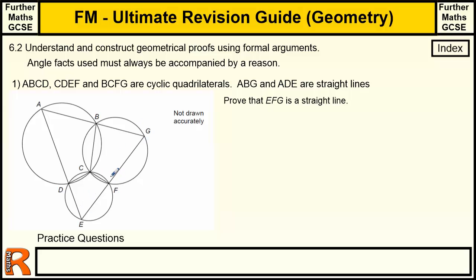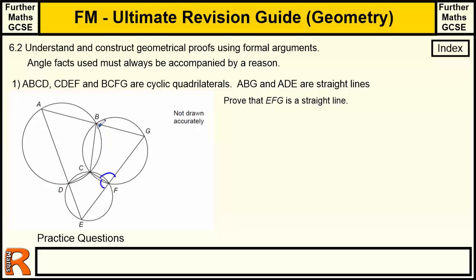There are a couple of ways we can approach this. The cyclic quadrilateral setup makes me want to use the rule that opposite angles add up to 180. To prove this is a straight line, I'd try to prove that two particular angles sum to 180 degrees. When doing formal proofs, it's best to solve the question on the diagram first using calculations, then redo it by labelling angles and stating which rules you're using.